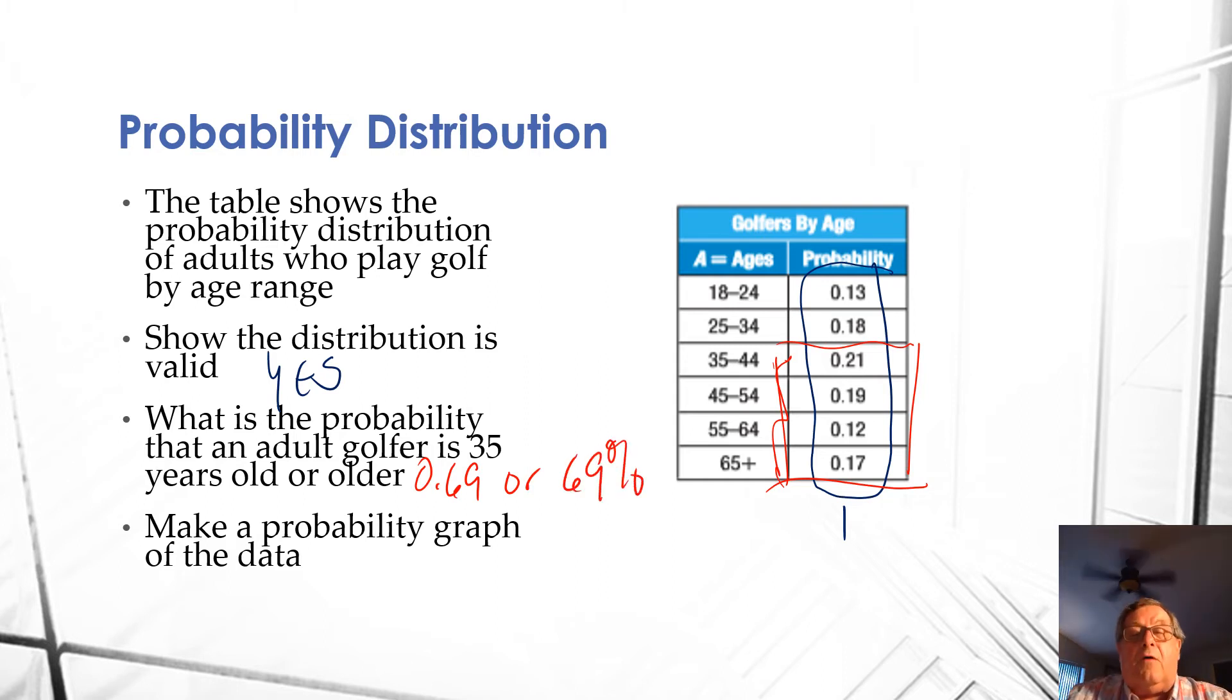So 69% of all the golfers are 35 years old or older, and it doesn't go below 18. I guess you don't play golf unless you're over 18, apparently, according to this probability distribution.